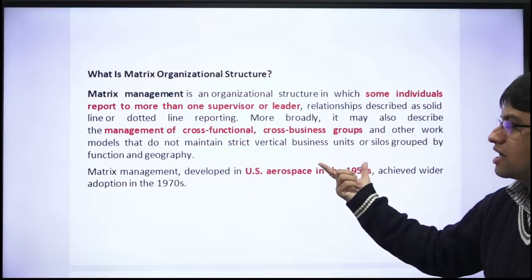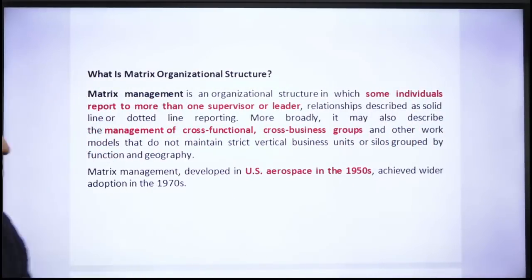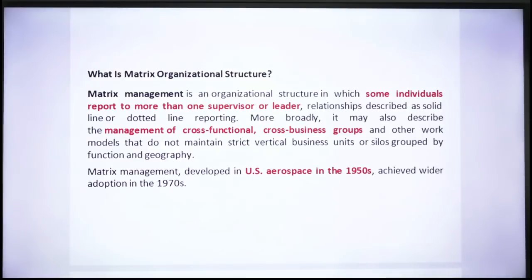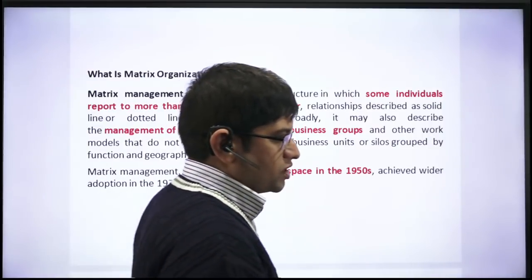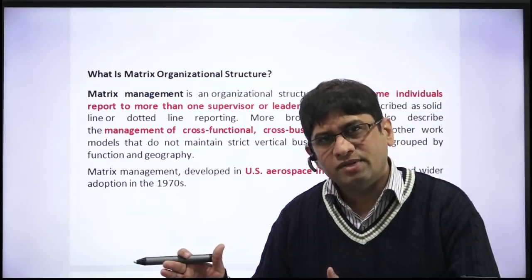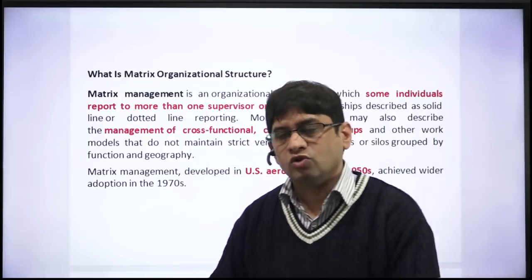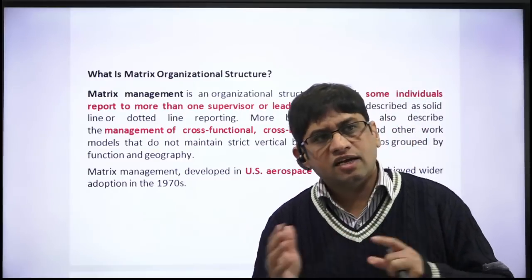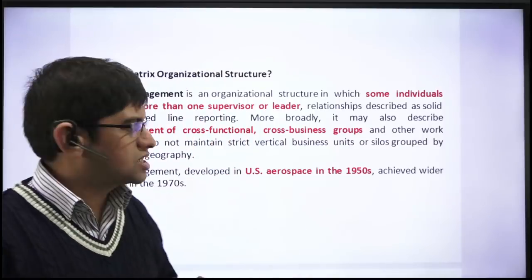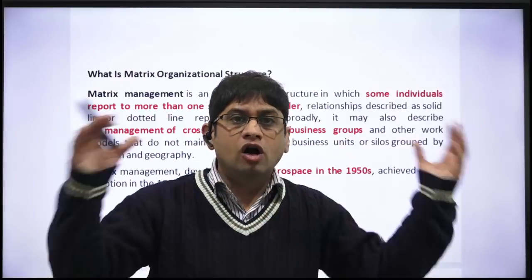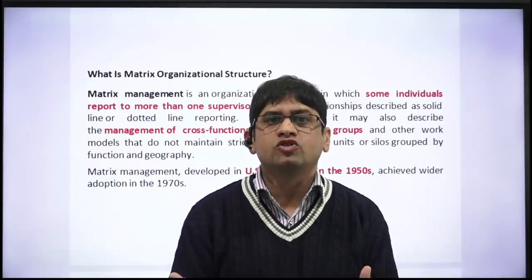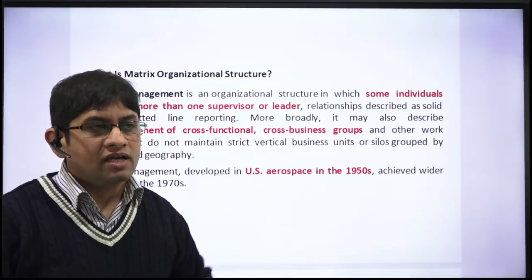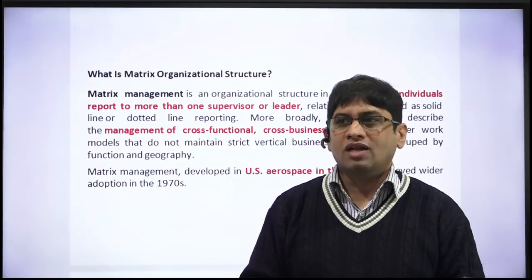The worker reports to more than one supervisor or boss, as shown by solid lines in the diagram. Cross-functional, cross-business teams are required to complete any project because different domains are needed. This kind of matrix management first came in the US aerospace industry in the 1950s. World War II ran from 1939 to 1945, and after it ended, the US — following the attack on Pearl Harbor by Japan — decided to develop its aerospace capability very well.